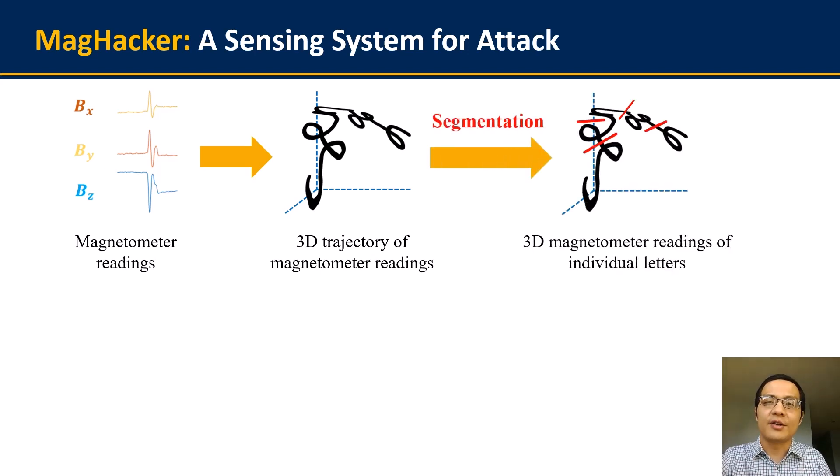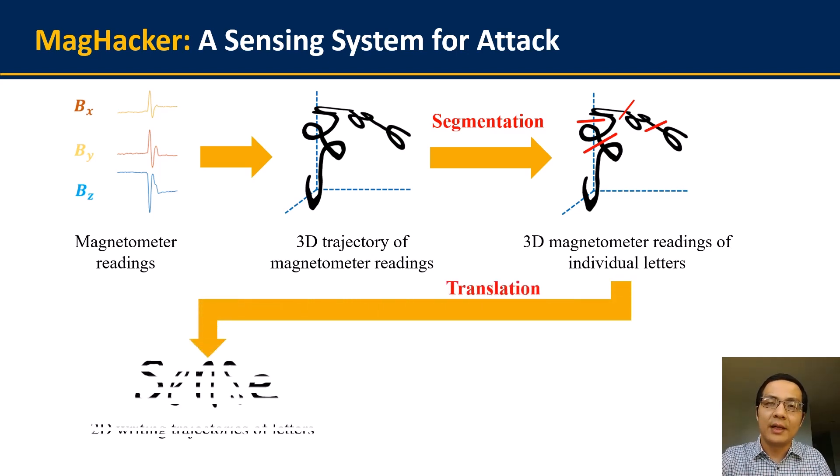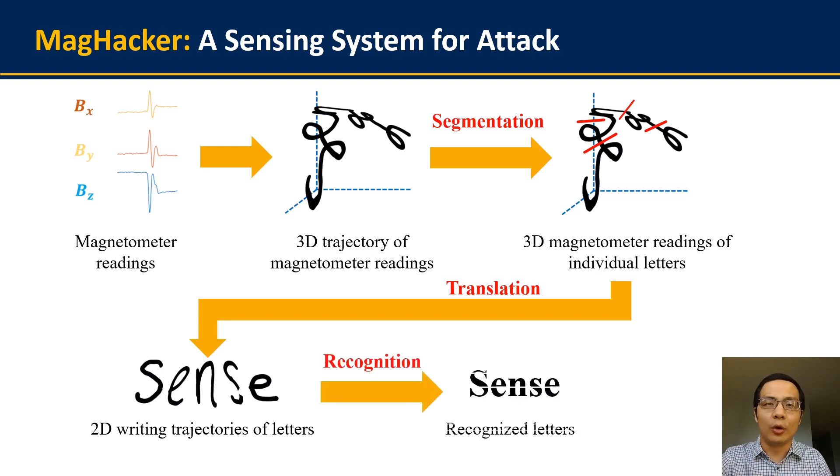To solve this problem, MagHacker generally takes three steps. First, it segments such continuous reading into small segments, so that each segment corresponds to an individual English letter. Afterwards, each segment is individually translated to 2D writing trajectory via projection and coordinate transformation. And as you can see here, after such process, the 2D trajectory will be much more recognizable. And eventually, the 2D trajectories will be sent to a convolutional neural network for letter recognition.